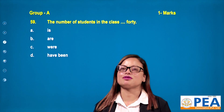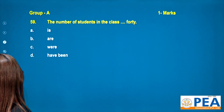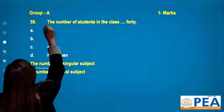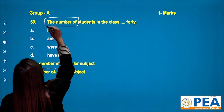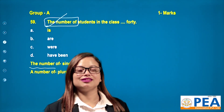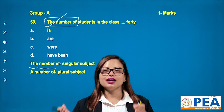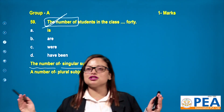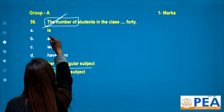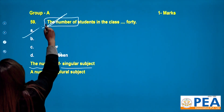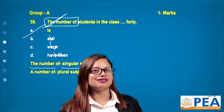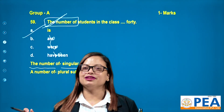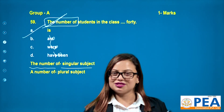Question 59: 'The number of students in the class ___ 40.' This is subject-verb agreement. 'The number of' makes your subject singular. A singular subject takes a singular verb. The correct answer is 'is'. Remember: 'the number of' is singular, while 'a number of' is plural.